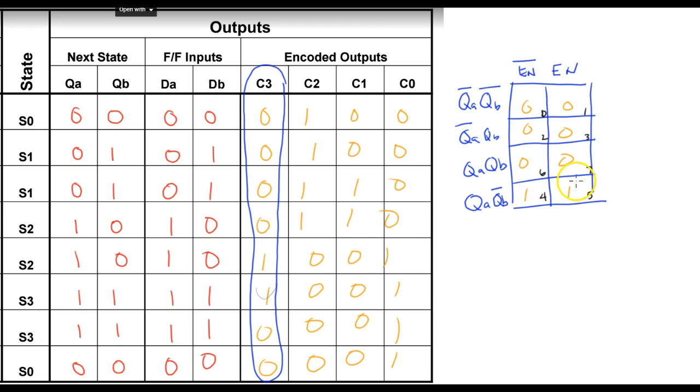So if we were to do our kmap, we would circle these two values here, which means we don't care about enable, which means that we have QA, QB not. And that is for C3, for our encoded output C3 there.